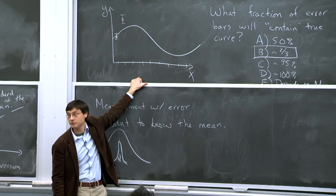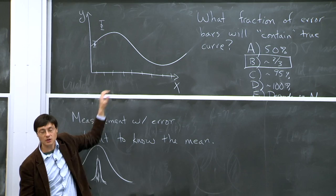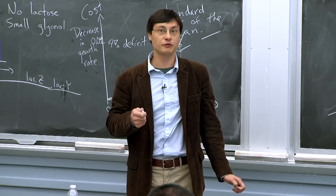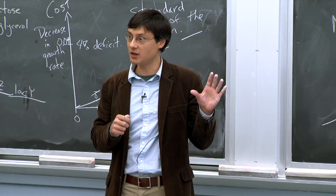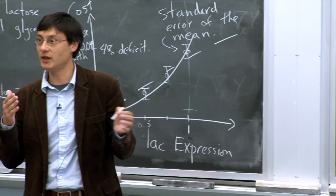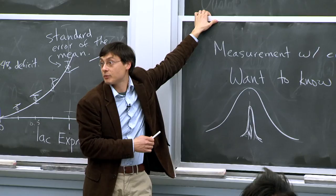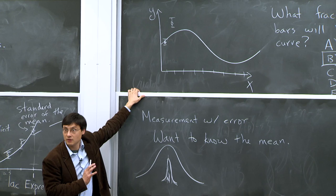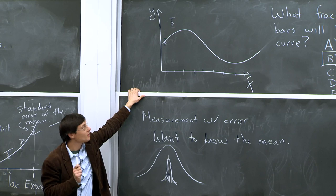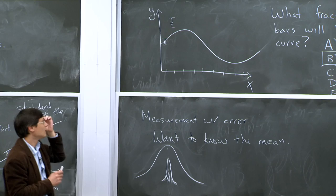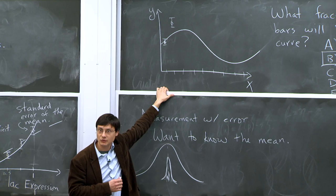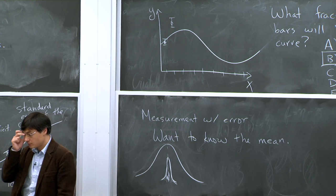There's always a sense that something is wrong if any error bar doesn't contain the line. But that's not, in principle, supposed to be true. Now, what if the curve is not the underlying reality, but instead a fit to the data? How does this change what fraction of error bars you expect to contain the true curve?